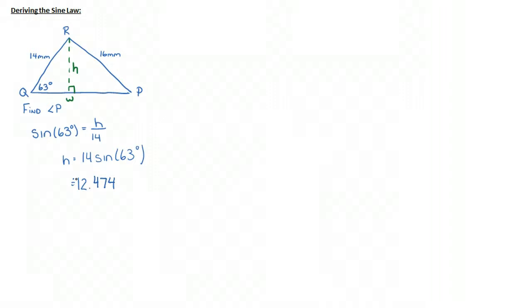So what I can then do is I can solve for P. And if I consider P, I know that H is the opposite and 16 is the hypotenuse. And therefore, I know that sine of angle P is equal to the opposite, which is the H value, which is 12.474, approximately over 16.